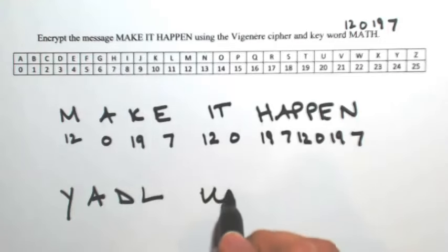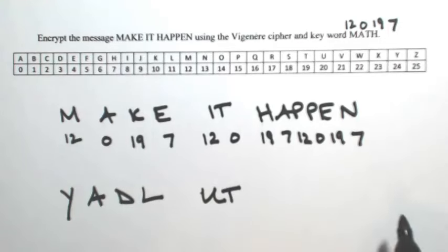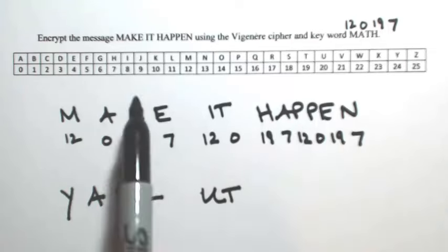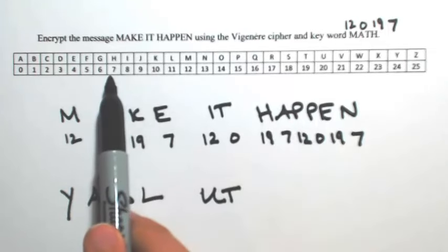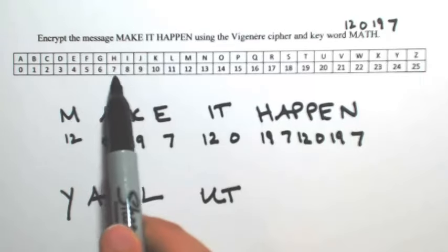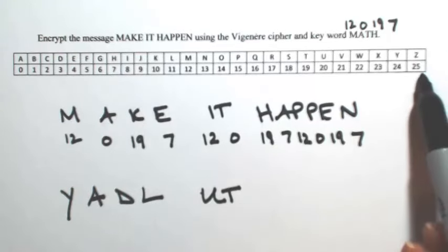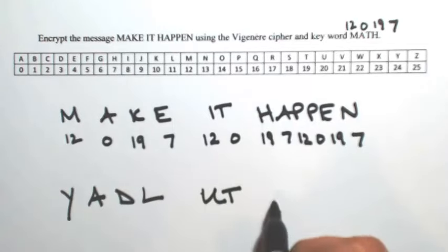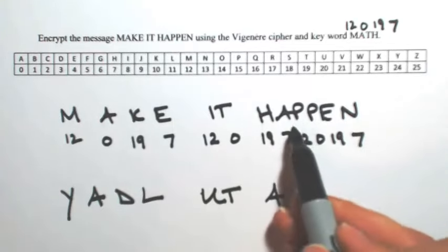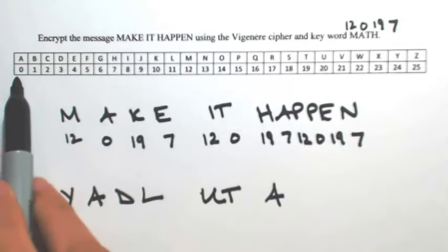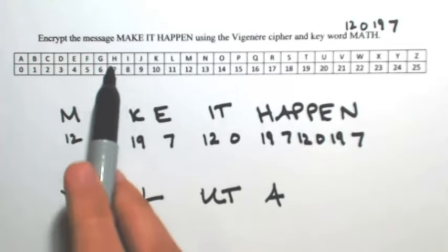T gets shifted by 0, so it stays the same. H is shifted by 19; H was 7, add 19 gives 26. Since it ends at 25, counting from 7 to 25 is 18, then one more — so that wraps to A. A is shifted by 7; A is 0, add 7, so that becomes H.